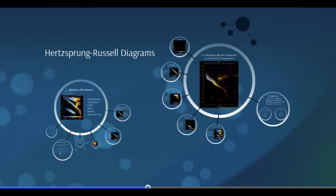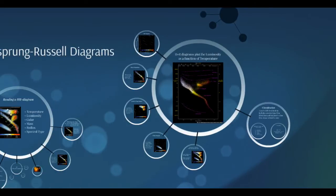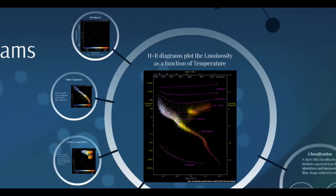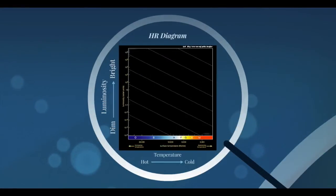In part two of this lesson, we're going to take our stars that we observe and start to group them in different ways and see what we can learn from grouping them. We're going to group them using something called a Hertzsprung-Russell diagram, or an HR diagram. On an HR diagram, we plot the luminosity on one axis and the temperature on another axis. These HR diagrams are very useful.